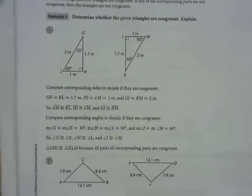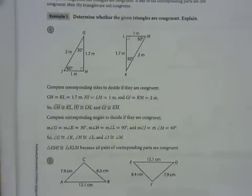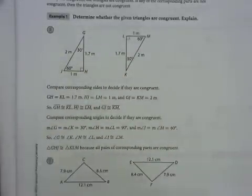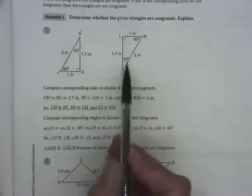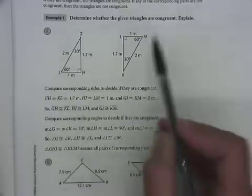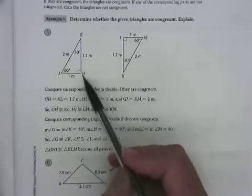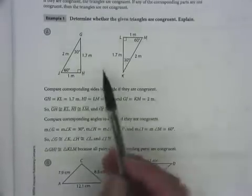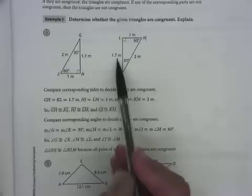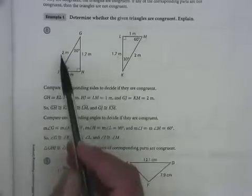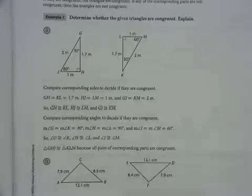In Example 1, we're comparing corresponding parts to determine whether the triangles are congruent. Angle G and angle K have the same measure; angle J and angle M have the same measure; angle L and angle H have the same measure. Segment GH and LK are the same length, segment LM and JH are the same length, and KM and GJ are the same length. So yes, in Part A, those triangles are congruent.